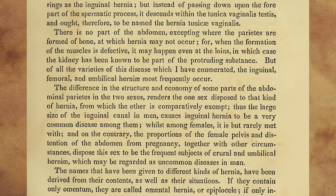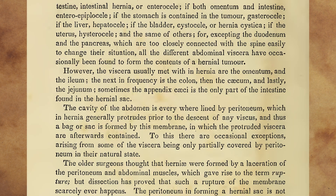The names that have been given to different kinds of hernia have been derived from their contents as well as their situations. If they contain only omentum, they are called omental hernia, or epiplocele. If only intestine, intestinal hernia, or enterocele. If both omentum and intestine, enteroepiplocele. If the stomach is contained in the tumour, gastrocele. If the liver, hepatocele. If the bladder, cystocele, or hernia cystica. If the uterus, hysterocele. And the same of others, for, excepting the duodenum and the pancreas, which are too closely connected with the spine easily to change their situation, all the different abdominal viscera have occasionally been found to form the contents of a hernial tumour. However, the viscera usually met with in hernia are the omentum and the ileum. The next in frequency is the colon, then the caecum, and lastly, the jejunum.